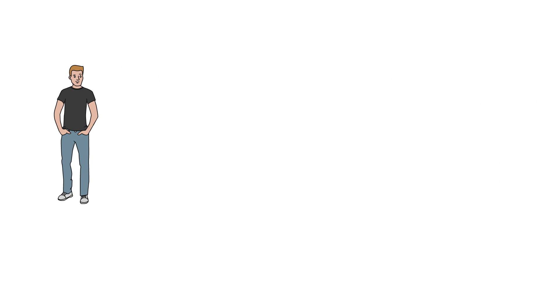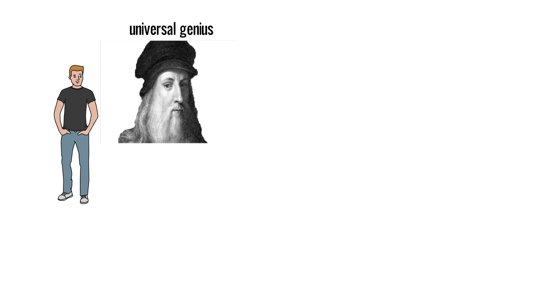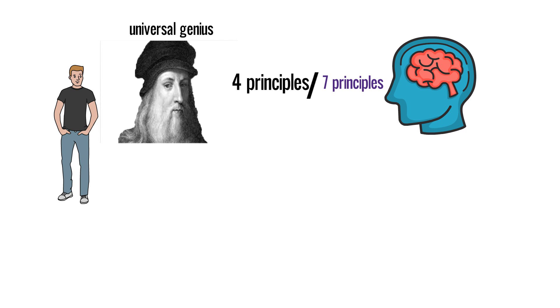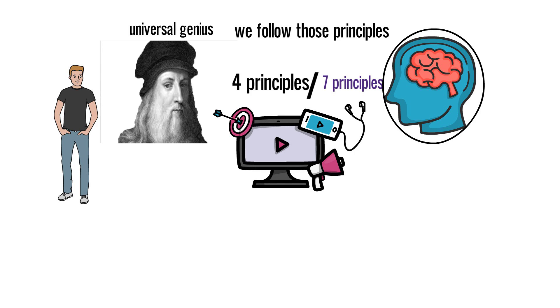Hi friends, in my last video, I explained why Leonardo da Vinci is still considered the universal genius. After which, I had explained four principles out of seven because of which da Vinci became a genius. Similarly, if we follow those principles, even we can become genius. If you have not watched the first part of this video, then you can watch by clicking the i button.